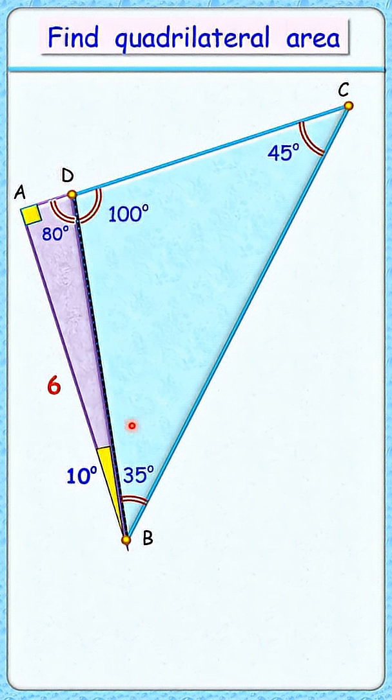These two angles are 45 degrees each, so it's an isosceles right triangle. AB is 6 cm, so AC is also 6 cm. The area of this triangle is half of 6 times 6, which equals 18 cm squared, and that's our answer.